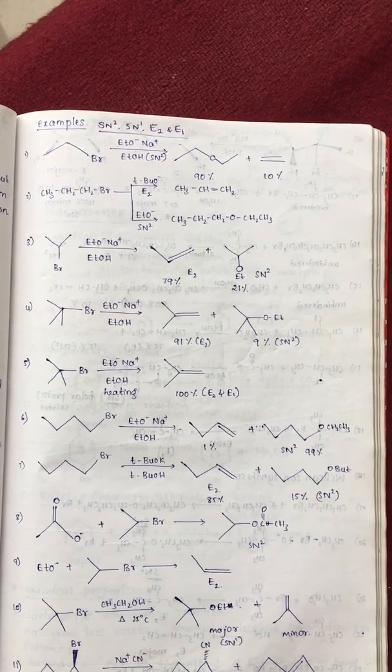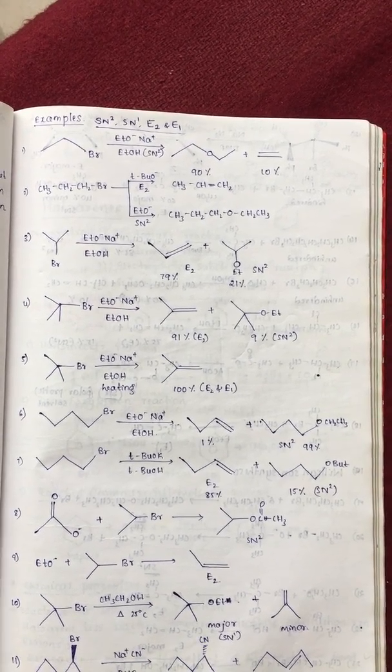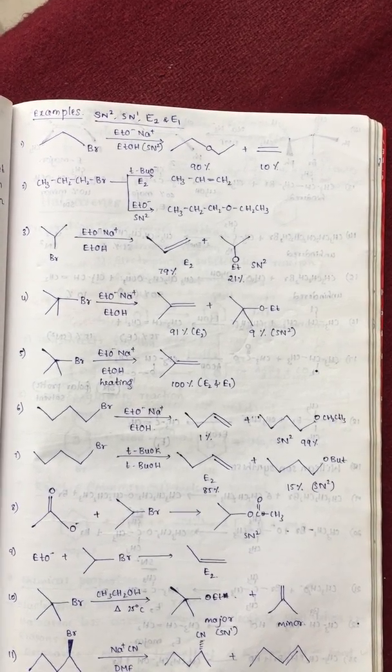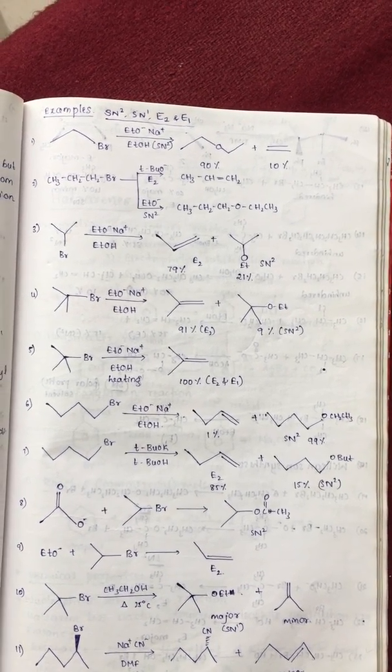But ethoxide ion is a good nucleophile. Therefore, tertiary butoxide means it forms alkene, ethoxide means it forms ether.